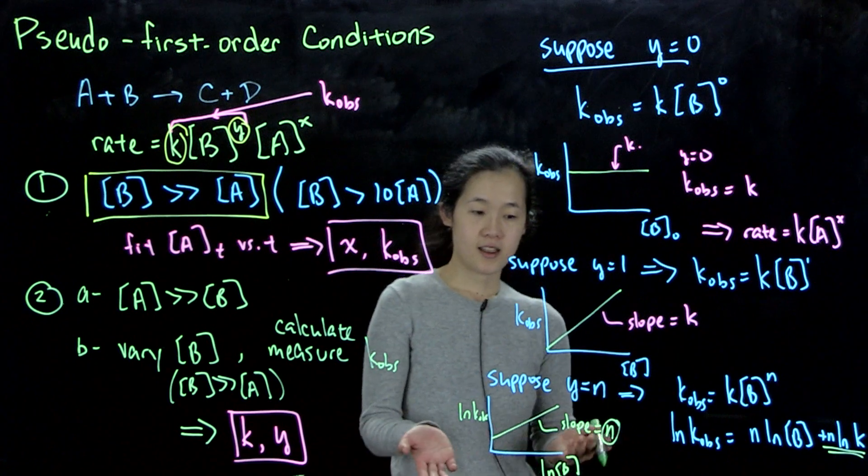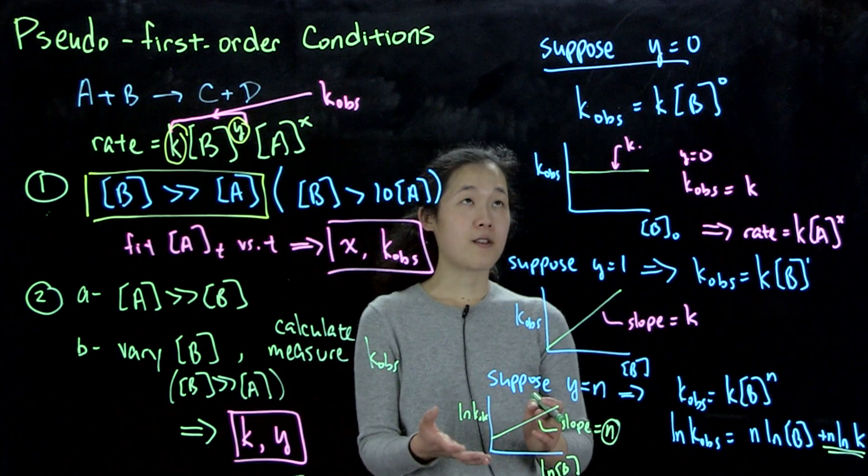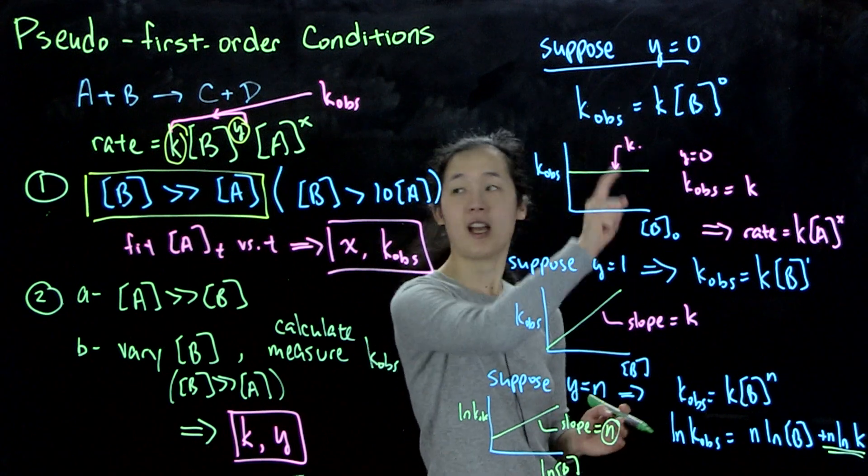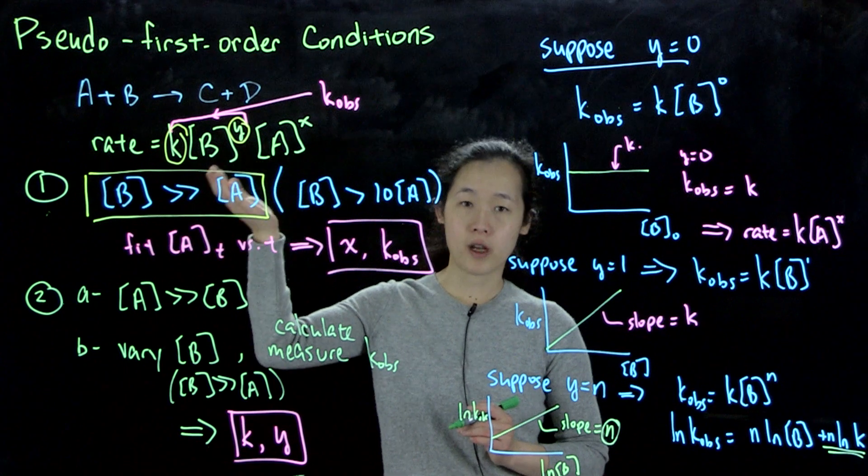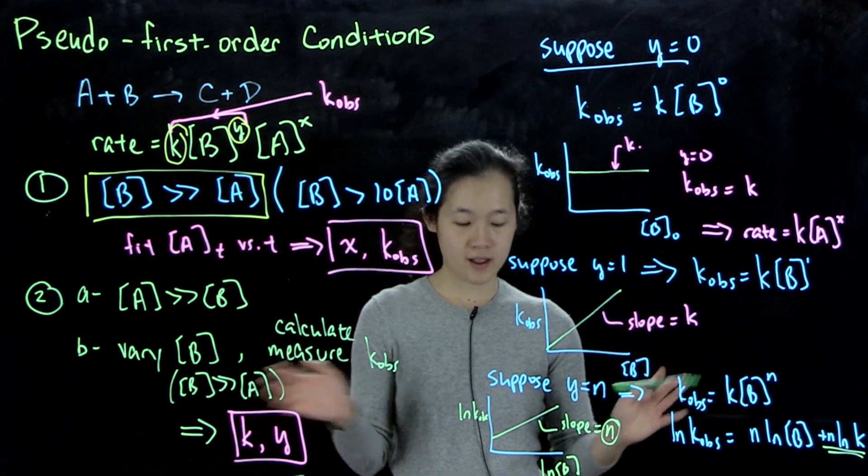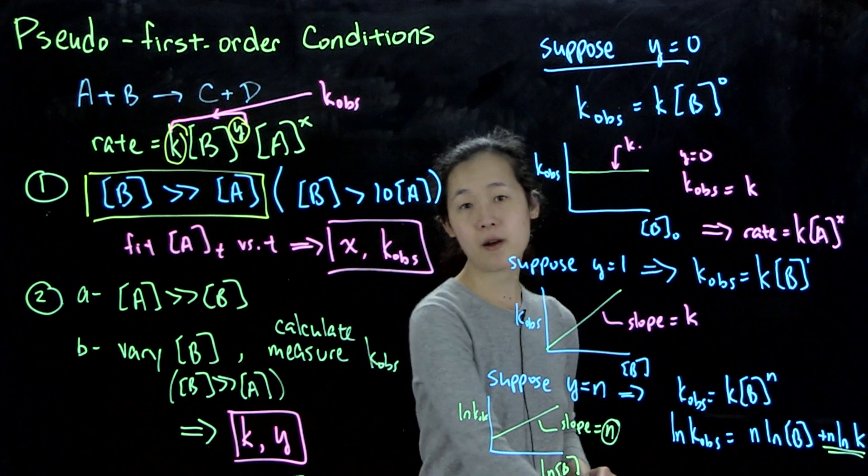So that is how you would solve for the second step. And then with these values, now that we have both y and k, we can have the final differential rate equation from this method. So we'll do actually some examples of data processing either in your problem set or in class, or maybe both.